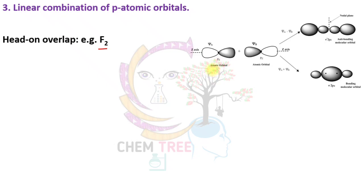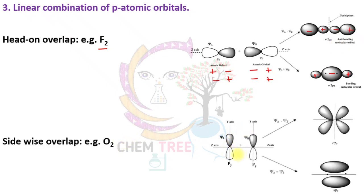In head-on pp overlapping, when the signs are plus-minus and minus-plus they give sigma bonding, or arranged as plus-minus-plus they give an anti-bonding molecular orbital. The second type of pp overlap is sideways overlapping — for example in the oxygen molecule — where sideways overlap always produces a pi bond. When px or py overlap sideways, they form a pi bonding molecular orbital or pi star anti-bonding molecular orbital.